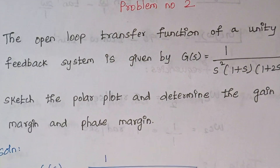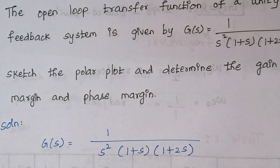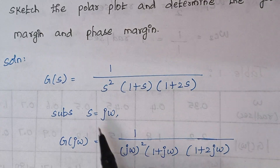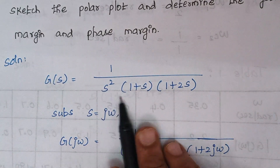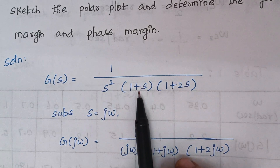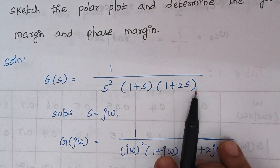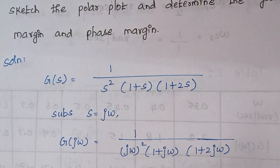The first step is we have to replace S by jω. So when you replace, G of S becomes G of jω, and S squared becomes (jω) squared. 1 plus S becomes 1 plus jω and 1 plus 2S becomes 1 plus 2jω.